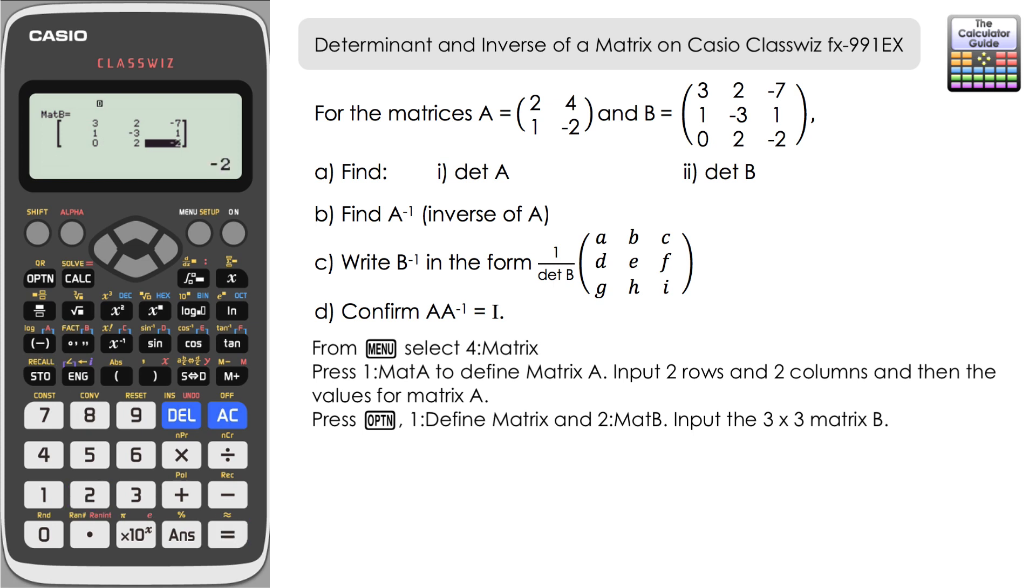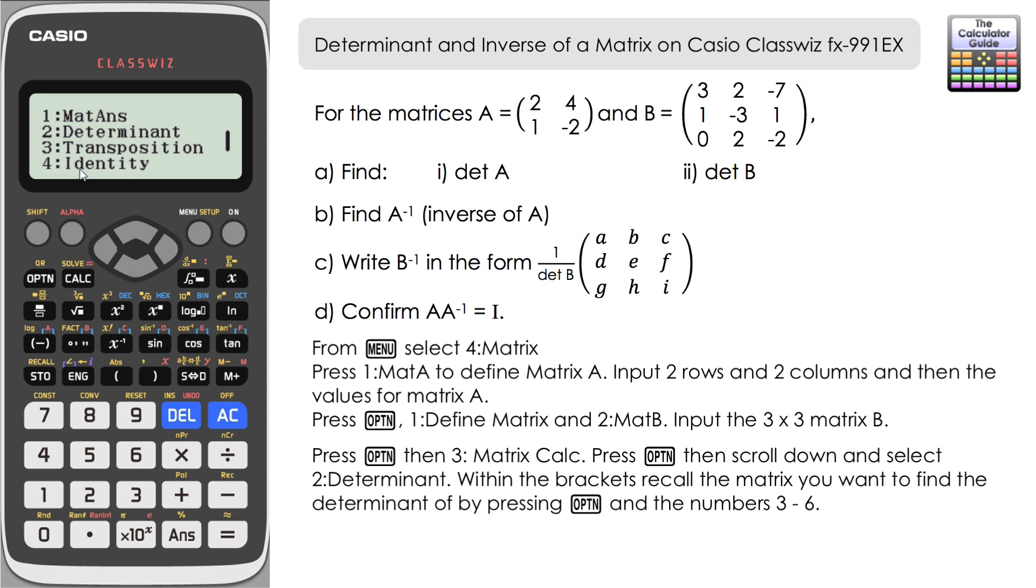And once you're done then press option and we'll move to the calculation phase, so it's 3 matrix calc. First off we need to find the determinants of both matrices. If you press option, scroll down one page, and then we can see option 2 here is determinant and it opens a set of brackets.